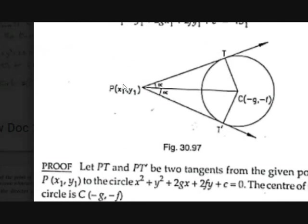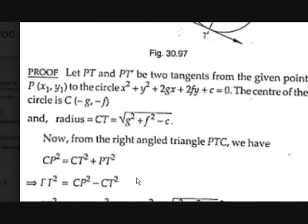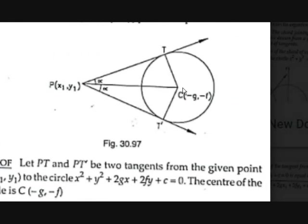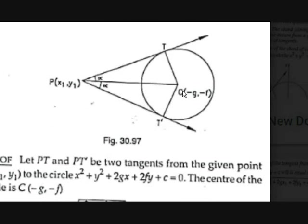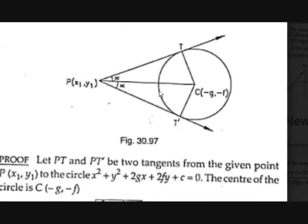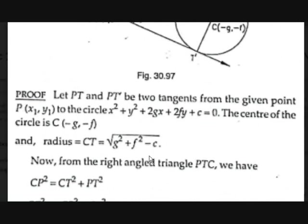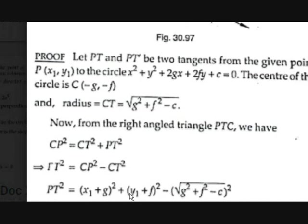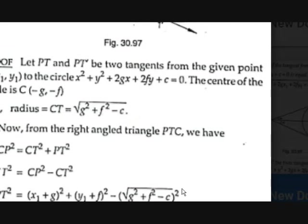CP is the distance from (−g, −f) to (x1, y1). Using the distance formula, CP = √((x1+g)² + (y1+f)²). So CP² = (x1+g)² + (y1+f)². And CT² = (√(g²+f²−c))² = g²+f²−c, so PT² = (x1+g)² + (y1+f)² − (g²+f²−c).